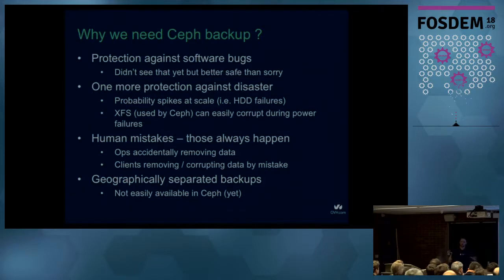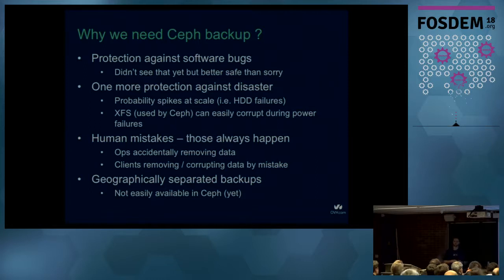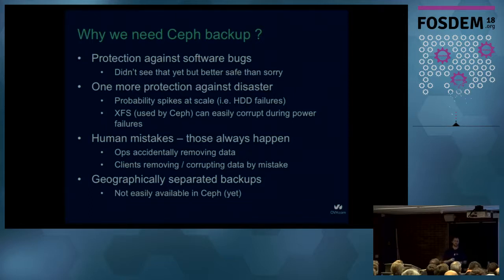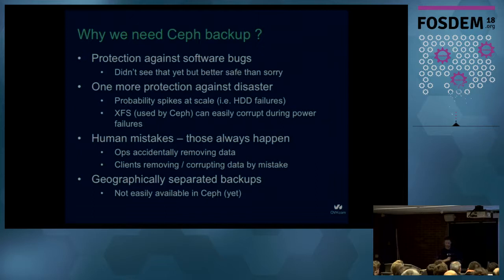Ceph handles two-copy loss well — it blocks traffic to the cluster and starts copying data as fast as possible. But we've also seen that Filestore, the original data layer for Ceph using XFS, has problems on power failure. We've seen that when you cut power and bring back a machine, XFS cannot recover. Big power failures happen, so let's be prepared.